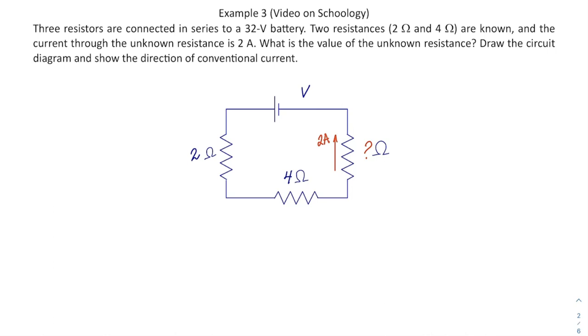Example three. We have a circuit where three resistances are connected in series, as you can see in the diagram. We know the battery's voltage is 32V and two of the resistances, 2Ω and 4Ω, but we don't know the unknown resistance. That is what we're trying to figure out.